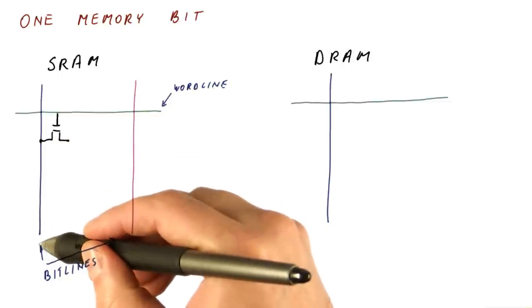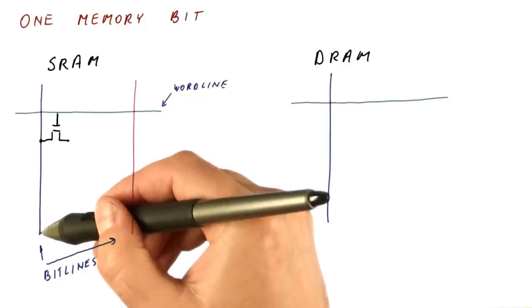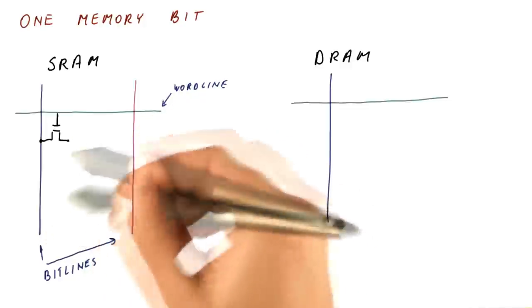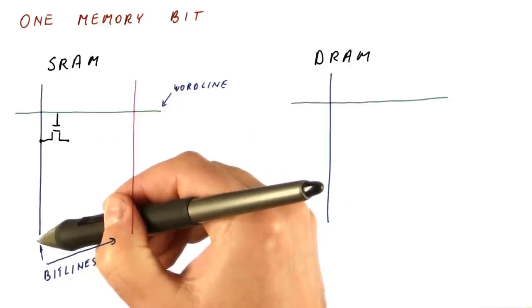So if we want to write data, we put the bit line at the value we want, and the cell gets that value. If we want to read the data, we let go of the bit lines, and then the cell here will get a new value on the bit line so we can sense what it is.